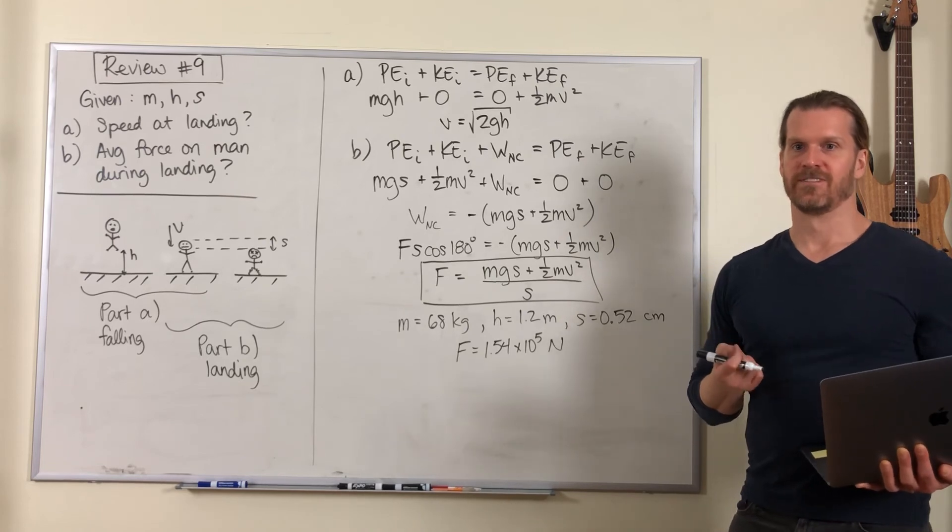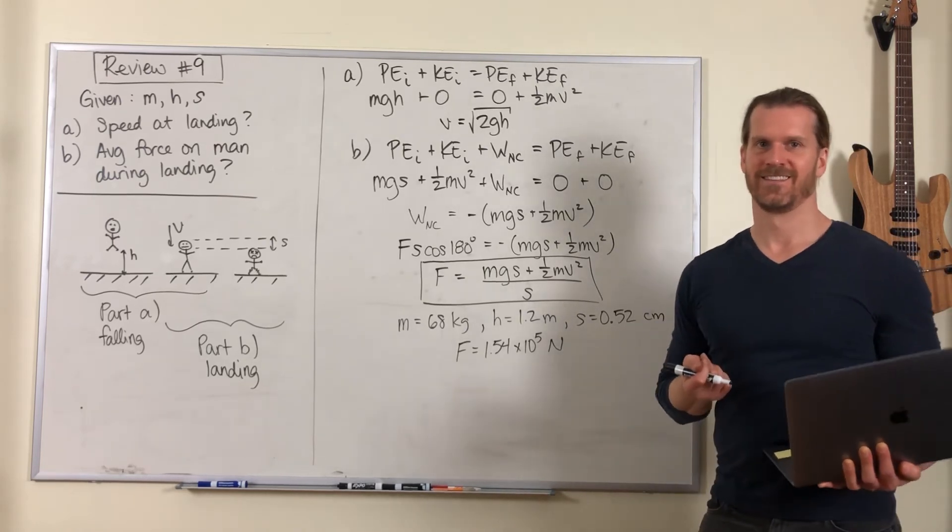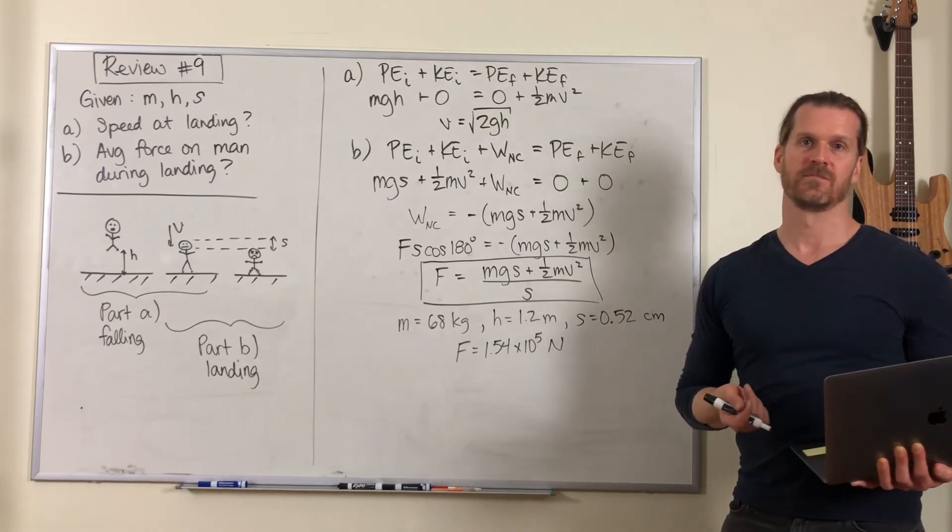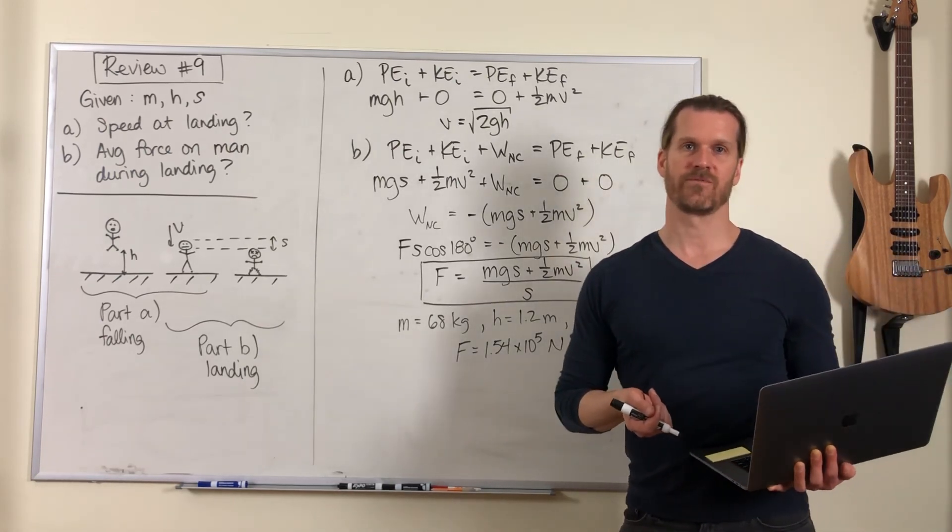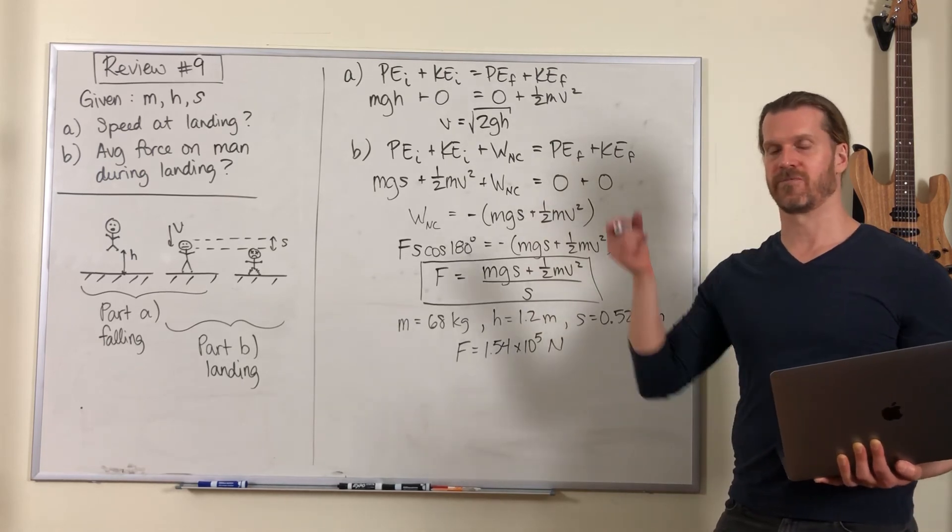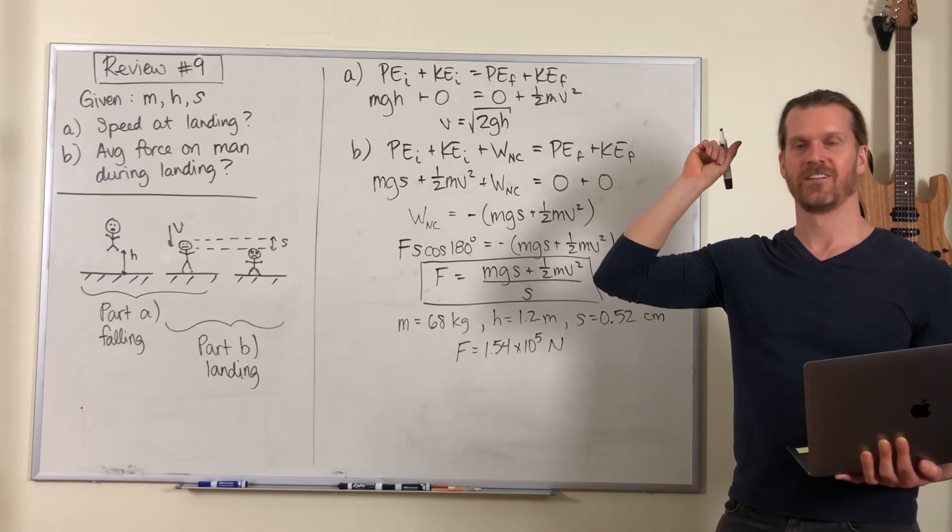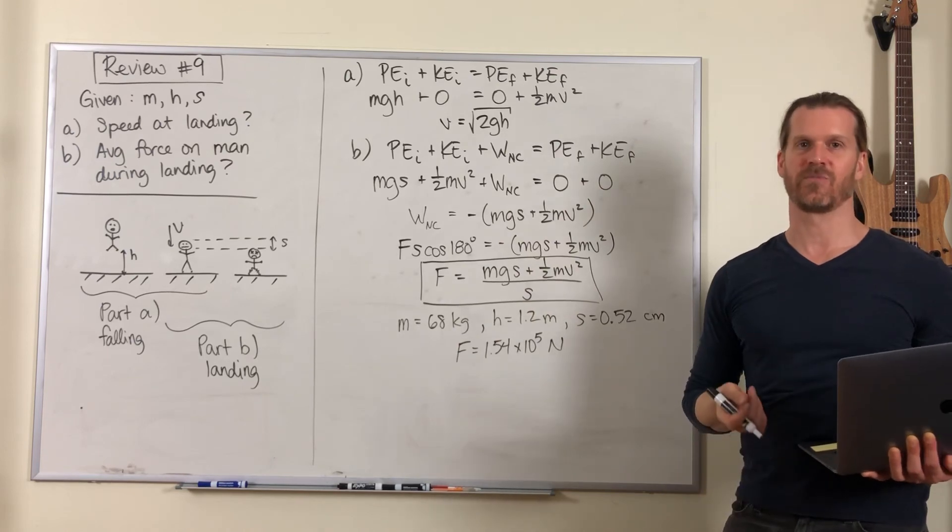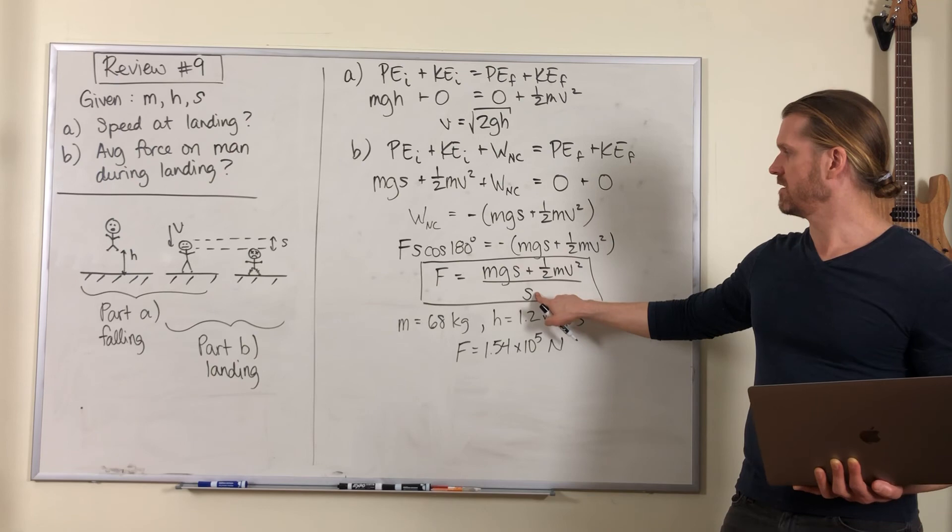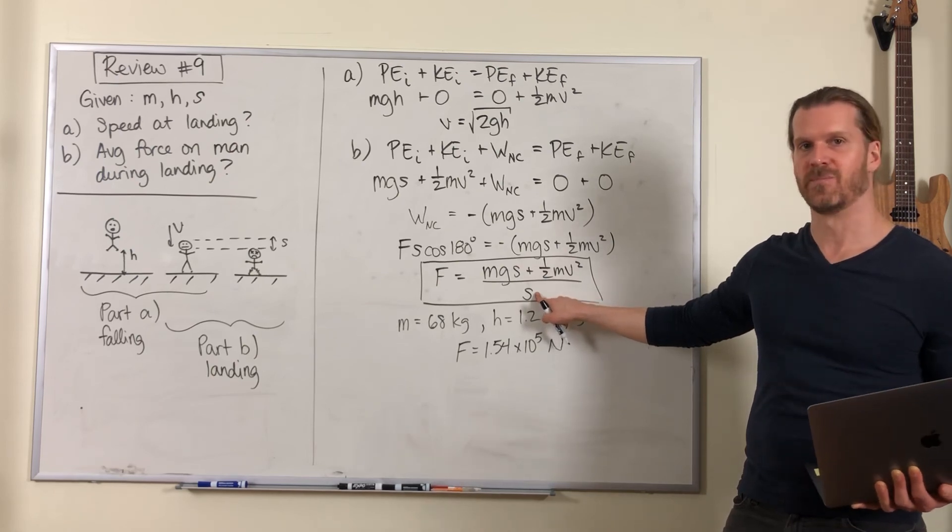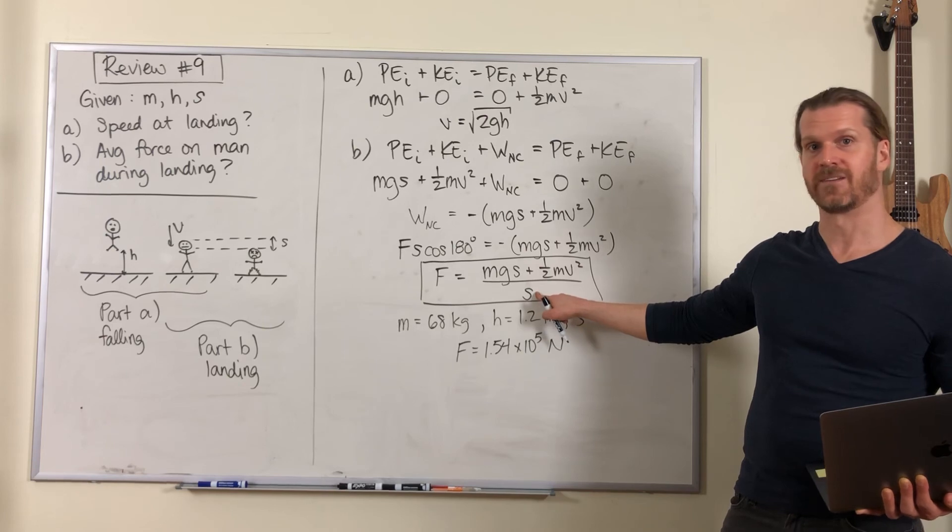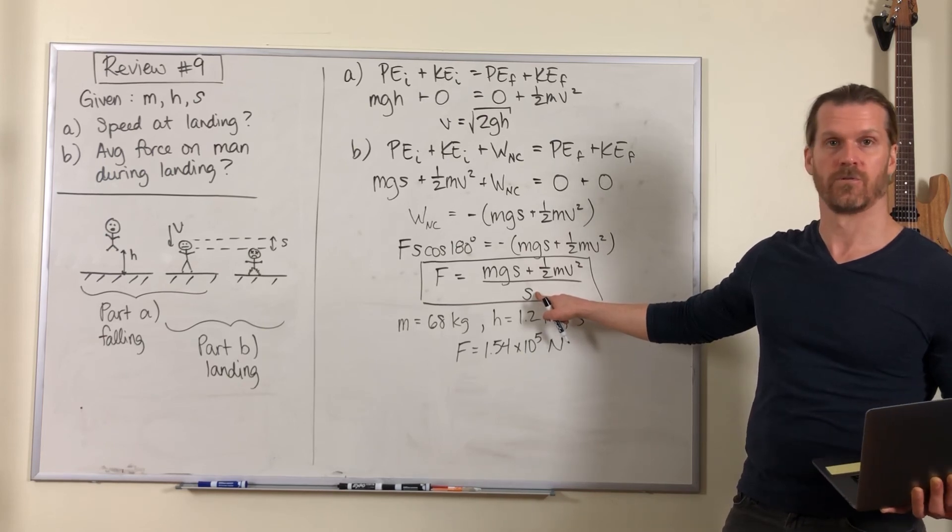Now if you're really good at landing, I don't know if you've ever watched videos of parkour or free runners, people who do sports like that, they're able to jump from really high heights and land safely without breaking themselves because they can take this number and make it very big.